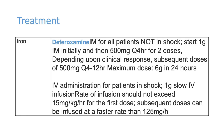Treatment of iron ingestion is deferoxamine. For patients not in shock: start 1 gram IM initially, then 500 mg every 4 hours for two doses. If the patient is in shock: 1 gram as a slow IV infusion. The rate of infusion should not exceed 15 mg/kg/hour. That is the standard dosing for iron overdose.